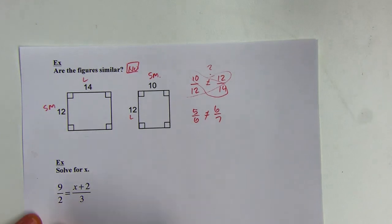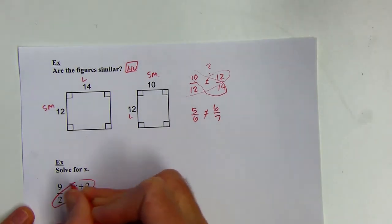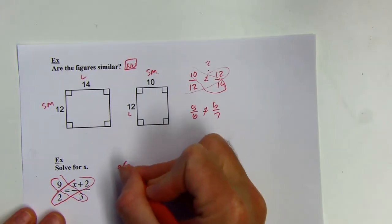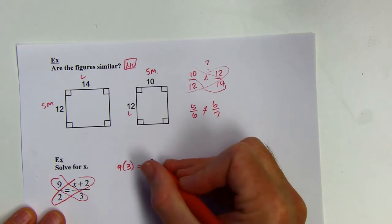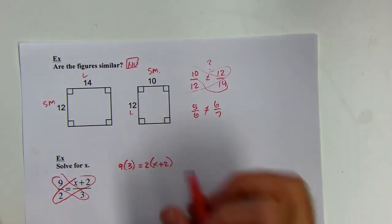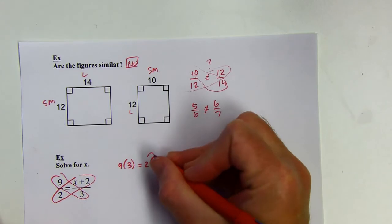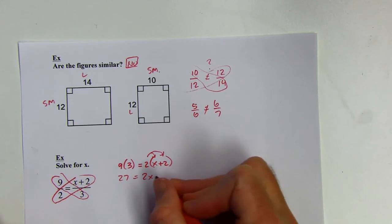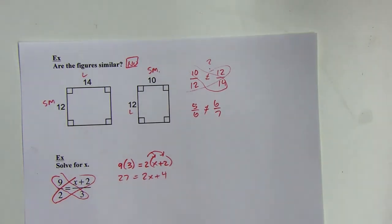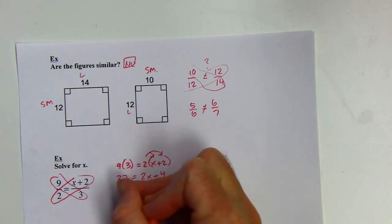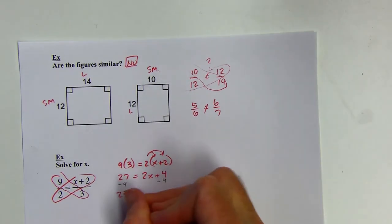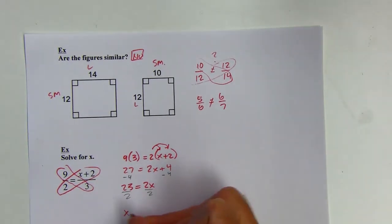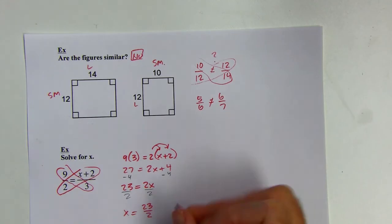Now solving for x — this is a proportion, two equivalent fractions, so their cross products will be equal. Nine times three equals two times the quantity (x + 2) — make sure you put x + 2 in parentheses because you need to distribute. On the left side I have 27; on the right, distributing gives 2x + 4. Subtract 4 from both sides, then divide by 2. It doesn't come out to an integer, so x = 23/2, or 11.5.